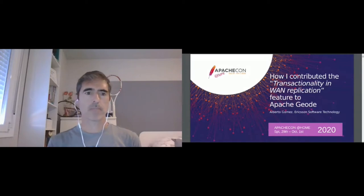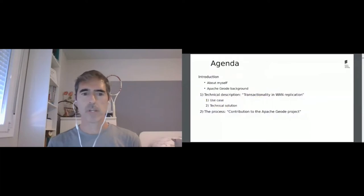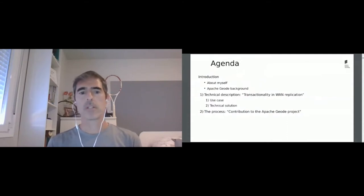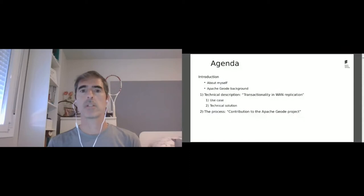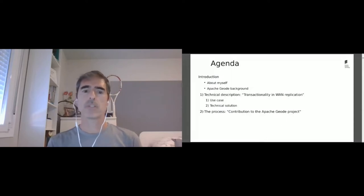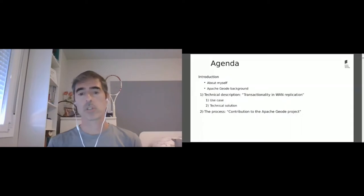This is the agenda we're going to follow today. First, some words of introduction about myself and also some Apache Geode background, just in case you're new to Apache Geode, so that you can have some context about the presentation. And then we'll jump into the meat of the presentation. In the first part, I will talk about the technical description of the transactionality in WAN replication feature — the use case that drove me to implement it, and later the solution I devised. In the second part, I will guide you through the process I followed to contribute the code into Apache Geode, from the point of view of someone who was quite new in the community.